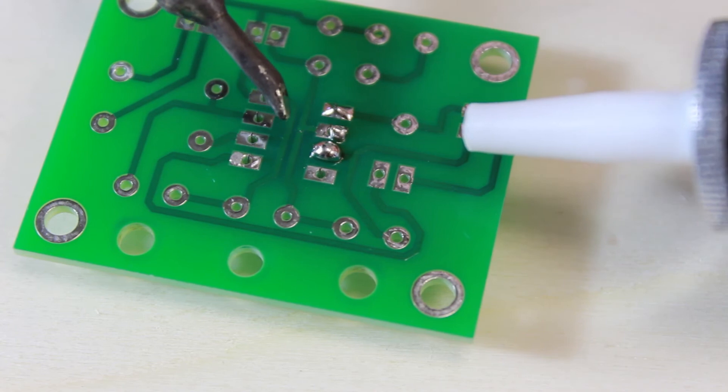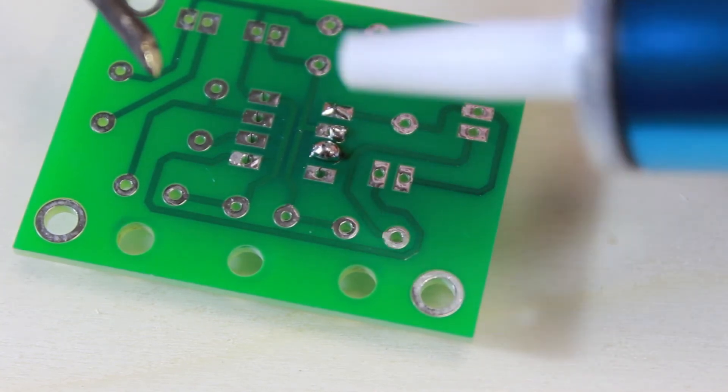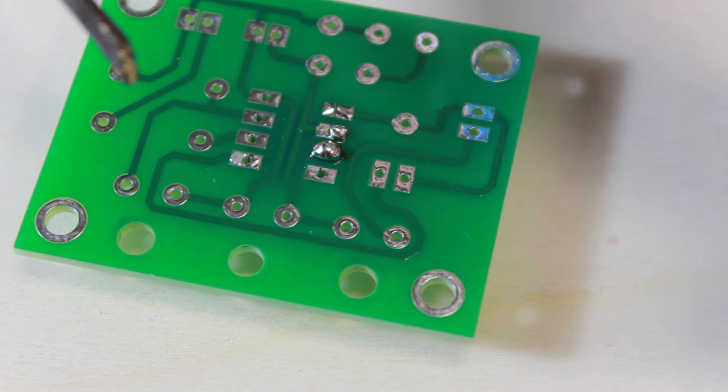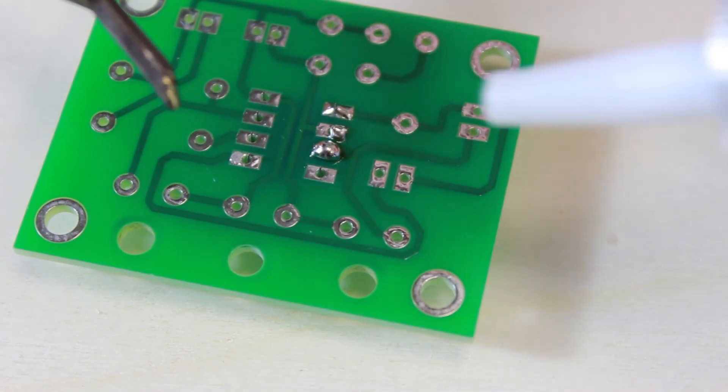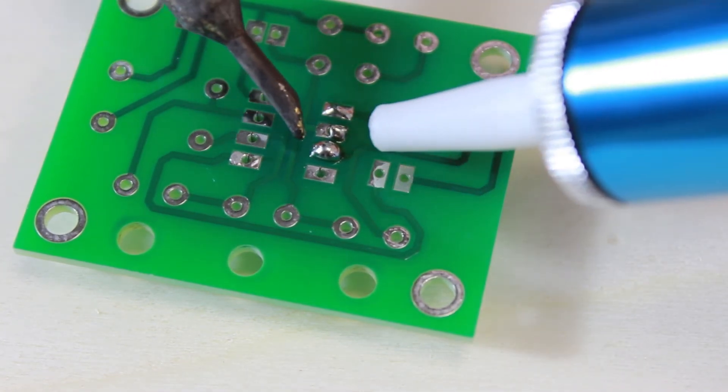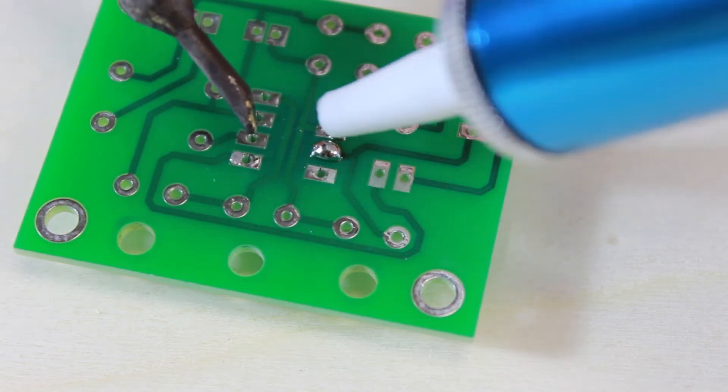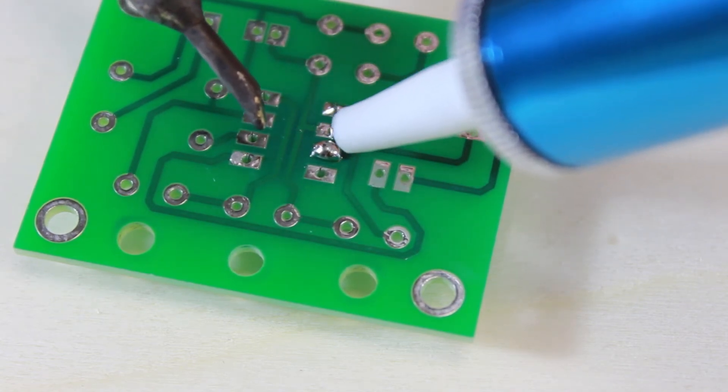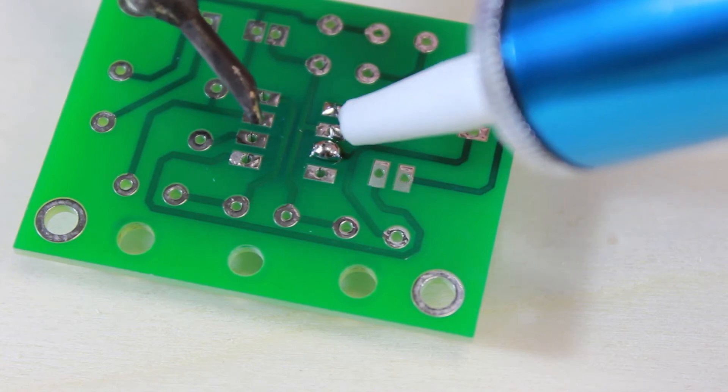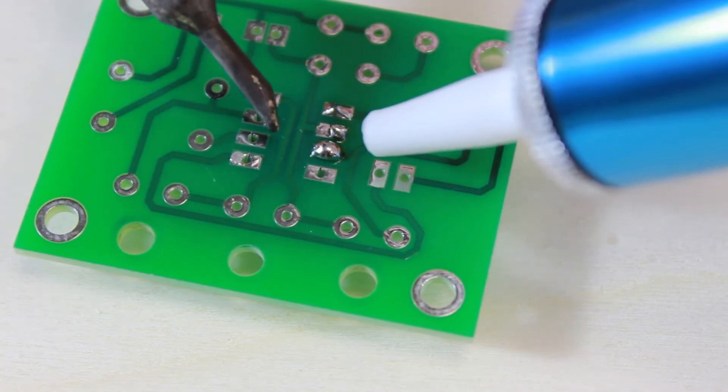So here's the joint we've applied too much solder. So we're going to use the solder sucker to remove it. We first depress the plunger on the solder sucker, so it's ready to go. We then heat the solder with the soldering iron, place the solder sucker across the top of the solder, and then depress the button so the plunger pops up and removes the solder. So let's give that a go.